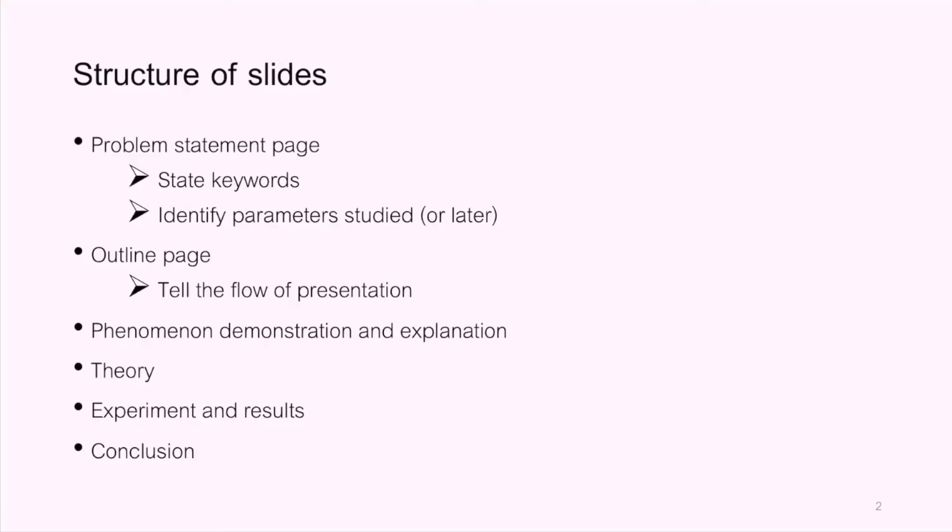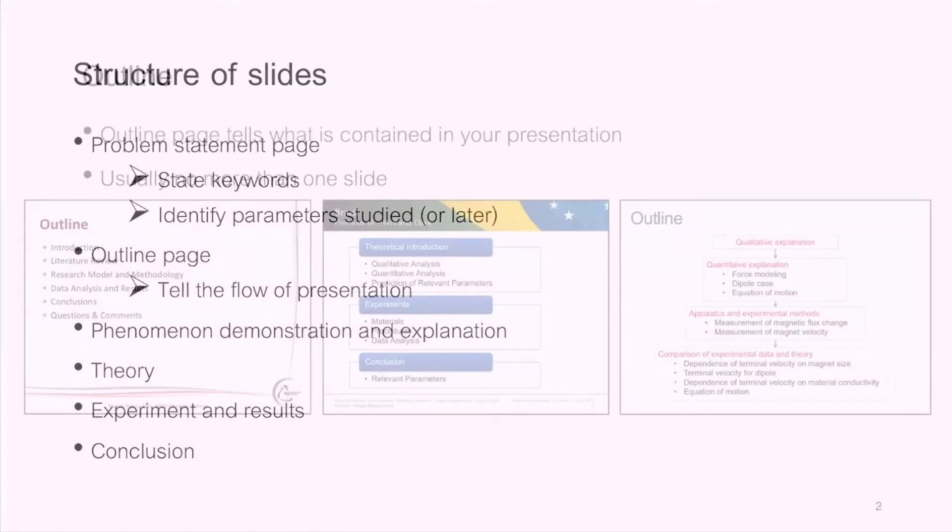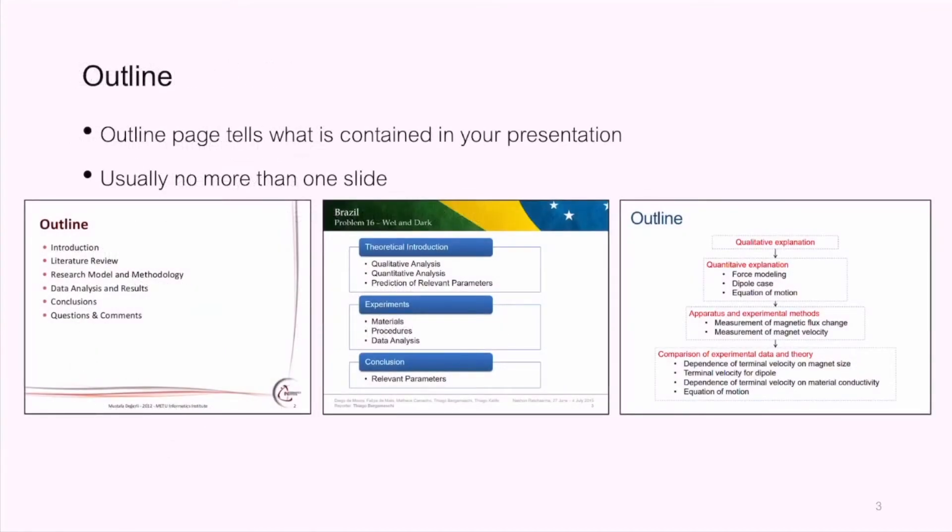Then come the usual presentation pages beginning with an outline followed by demonstration and explanation of phenomenon. The theory behind and to be tested. Experiment, results and conclusion. An outline tells the flow of the presentation. It gives the audience what to expect. The outline format varies from saying very little to extensive list of things you want to say. However, try to keep it in one slide.